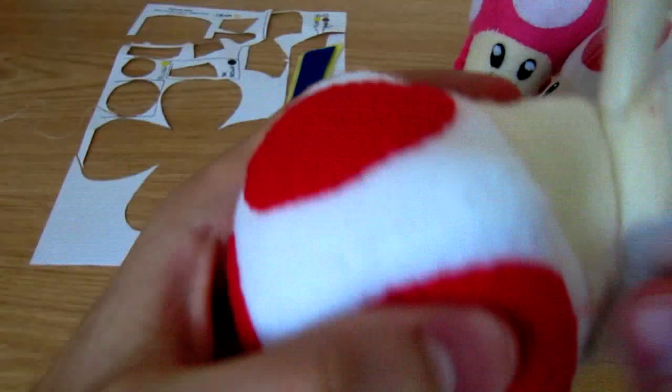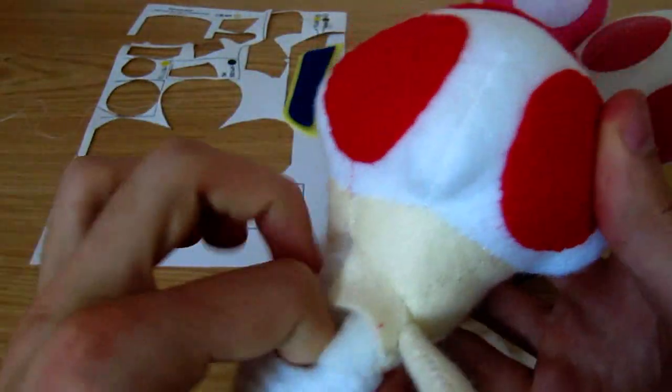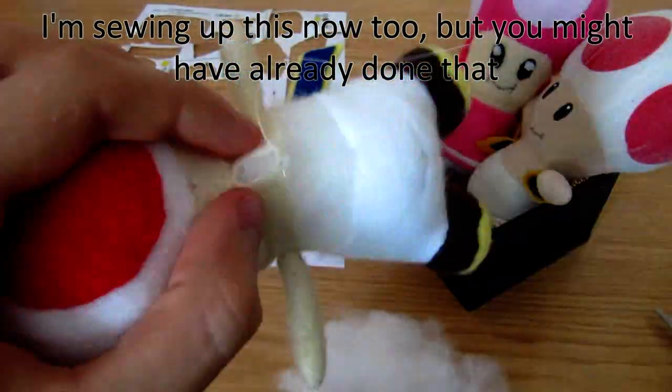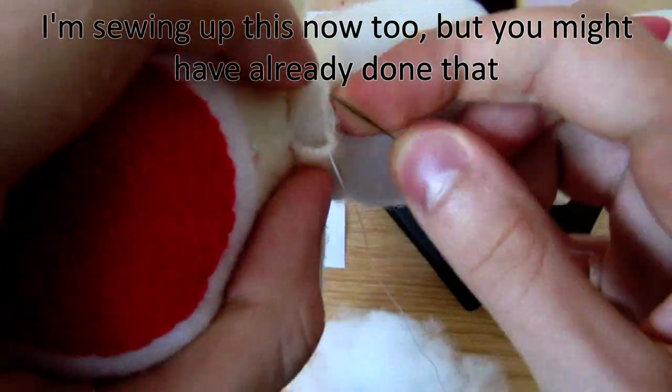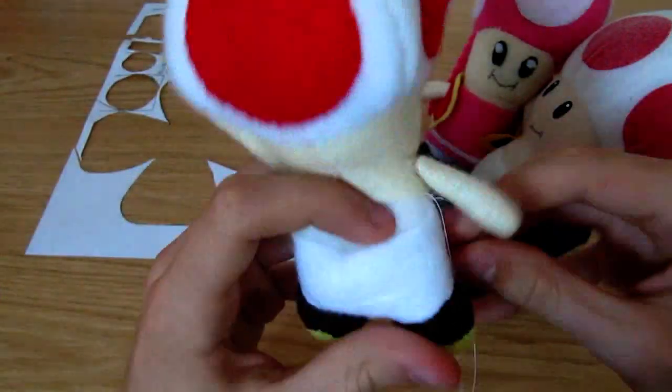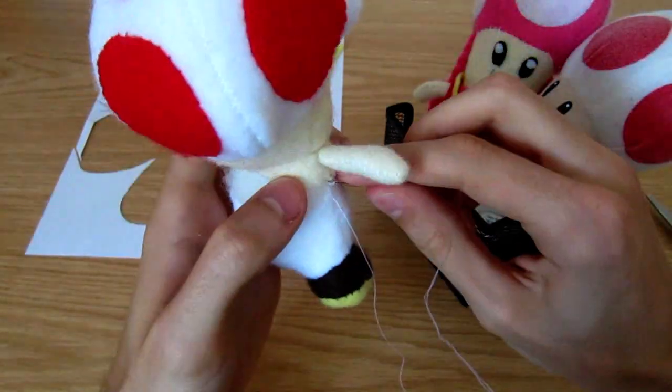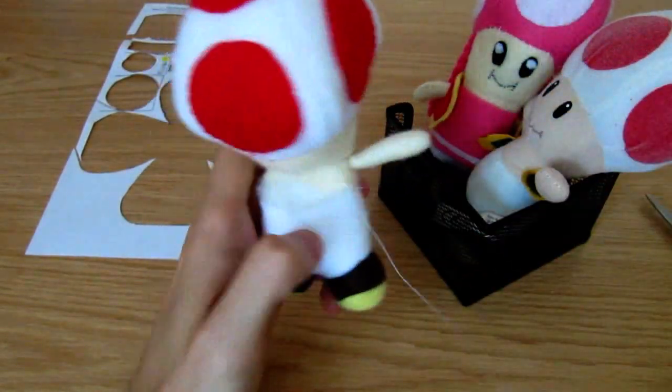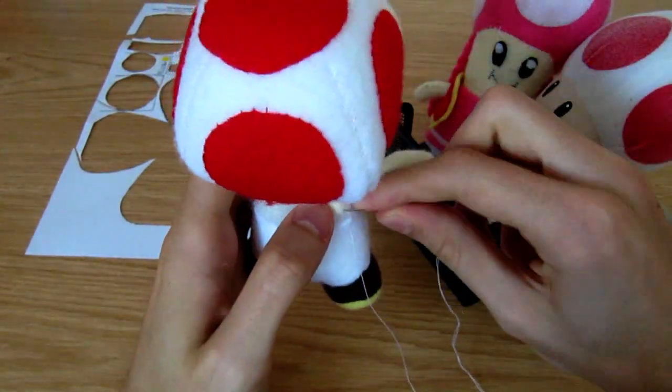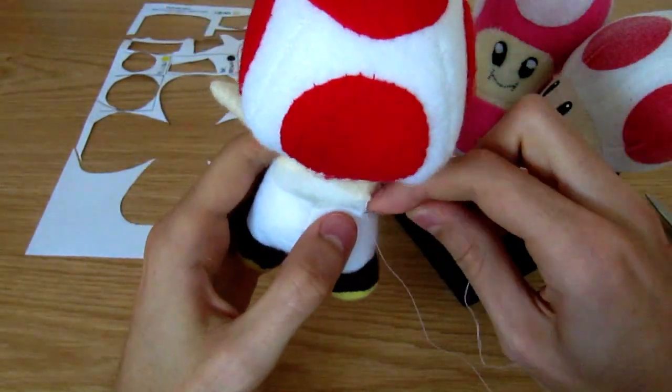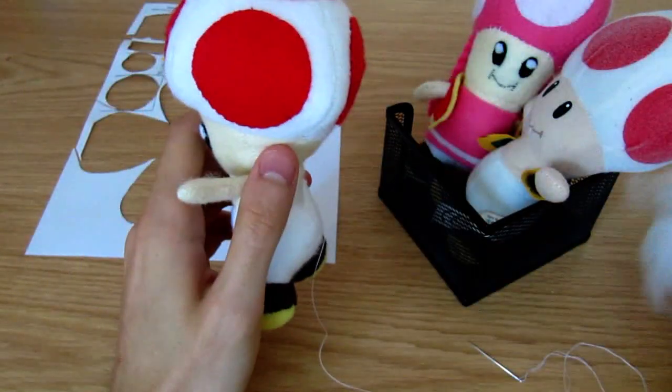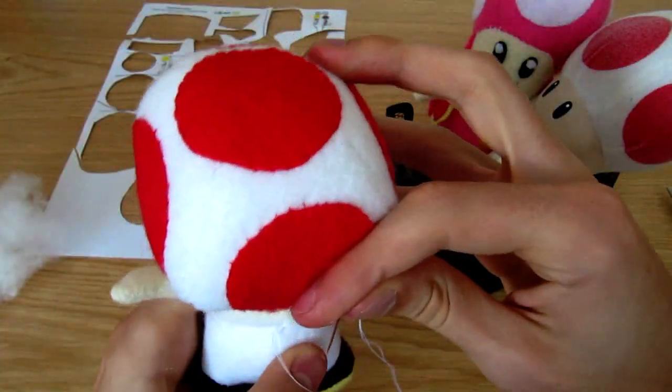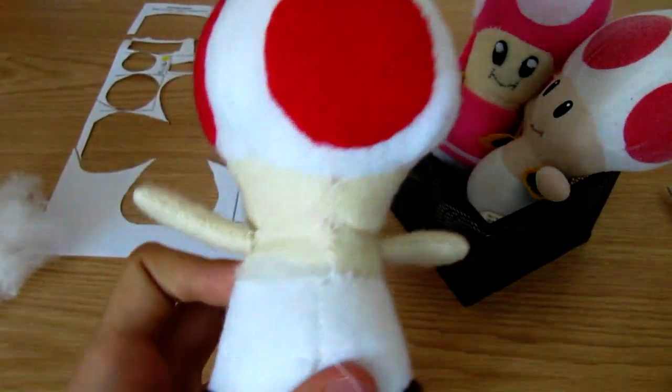Stuff the toad well, and do up its back with ladder stitches, stuffing as you go along. You could use blanket stitches on the outside here, because this part will be covered by toad's coat, but I'm making sure the naked toad will look good too. Remember to keep your target lined up, or you'll mess up like I did here.